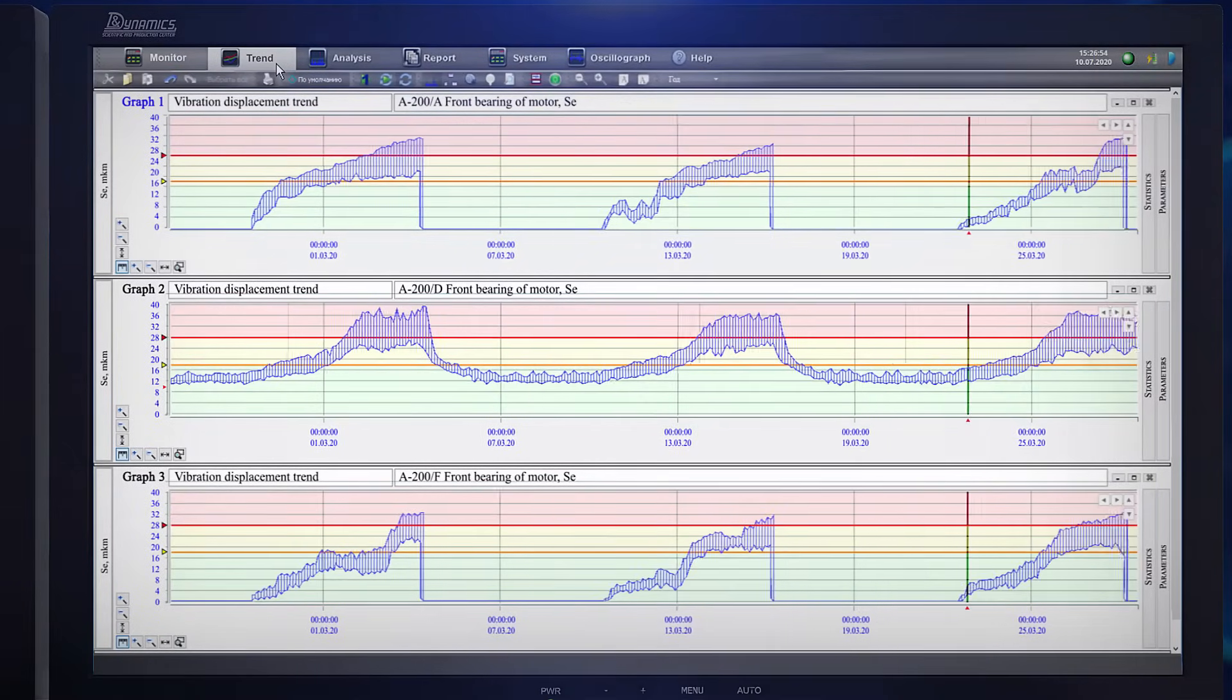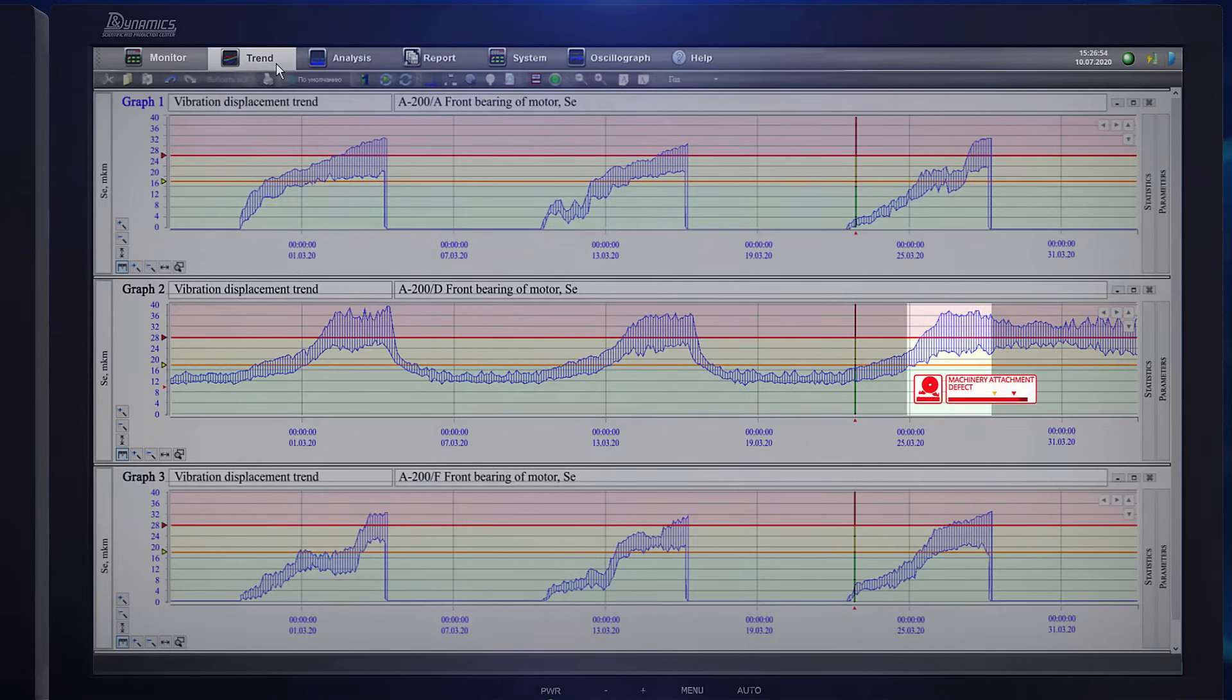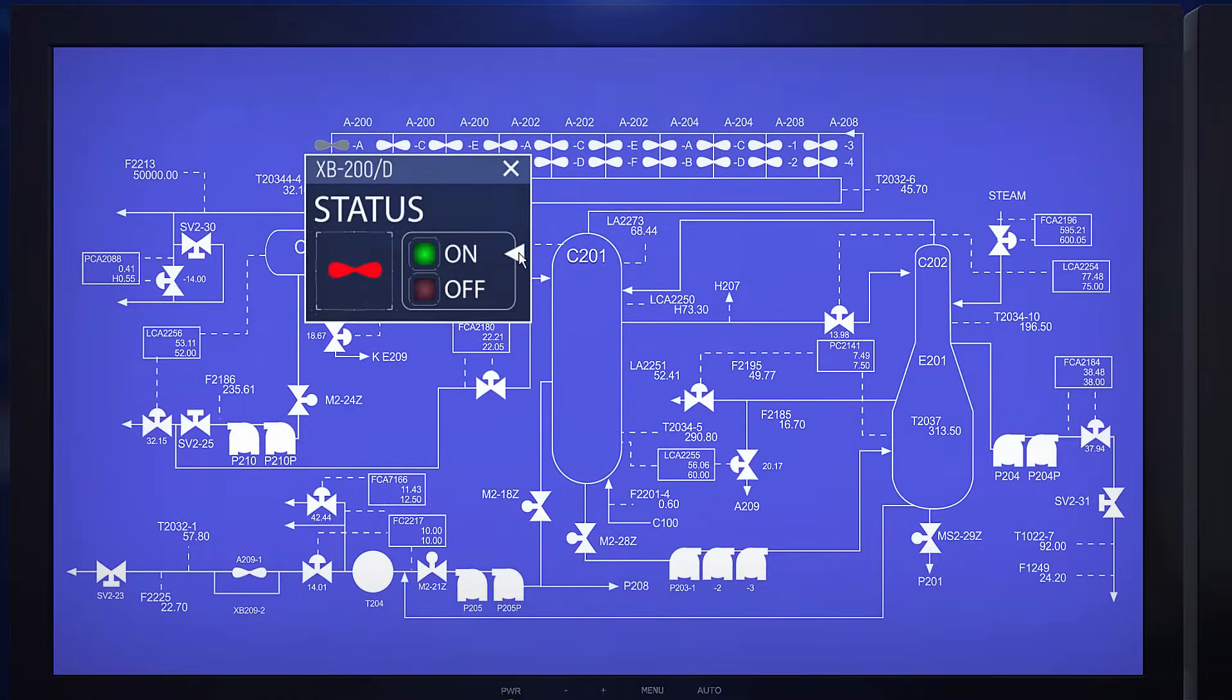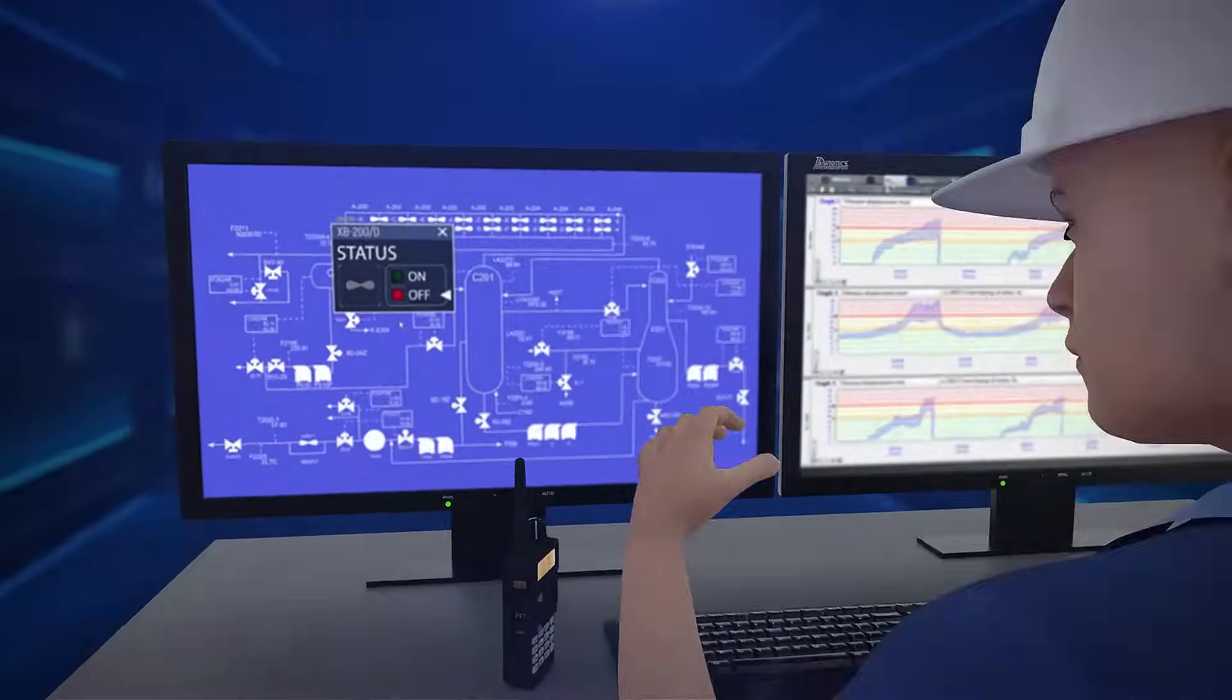After a while, the fifth air cooler reached an unacceptable state and the operators' attempt to improve the fin fan's health by switching the two closest machines off failed. They were forced to decommission the air cooler and request maintenance.